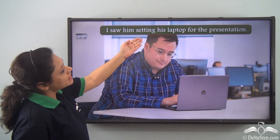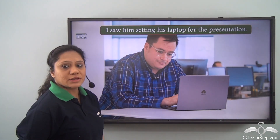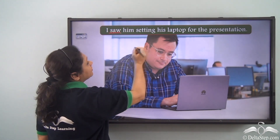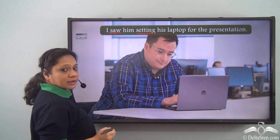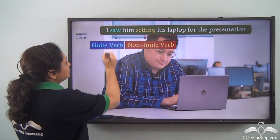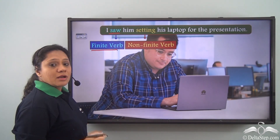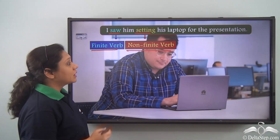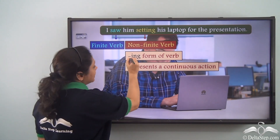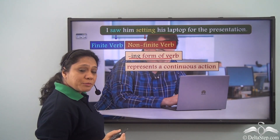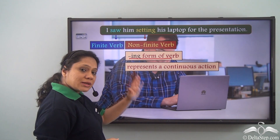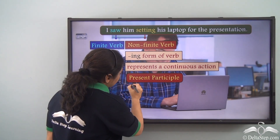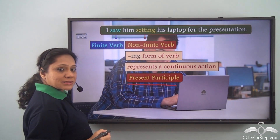I saw him setting his laptop for the presentation. Let us identify the verbs: 'saw' and 'setting'. In this sentence, 'saw' is the finite verb whereas 'setting' is the non-finite verb. This non-finite verb is the -ing form of a verb which represents a continuous action — it is showing an action in progress. So in this sentence, it is acting as the present participle.